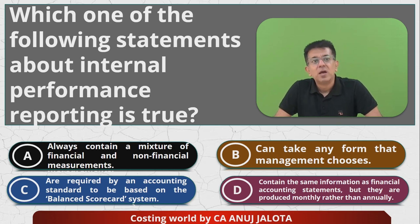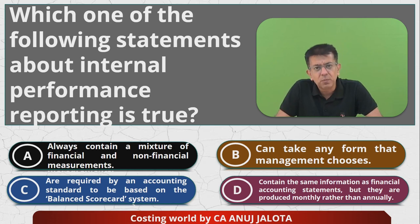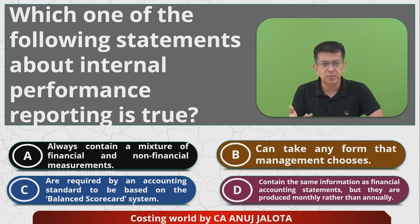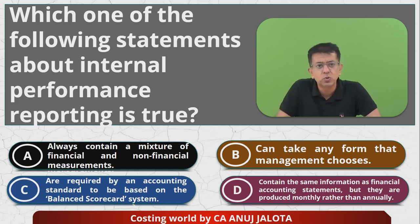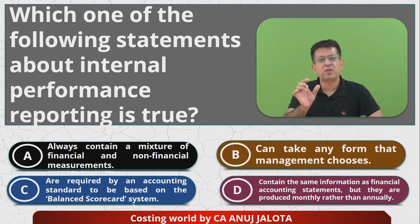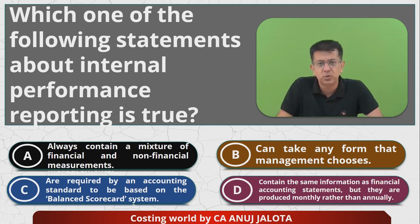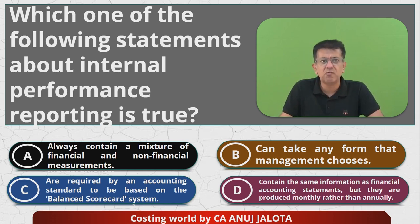Option A says it always contains a mix of financial and non-financial measures. That is not necessarily true — it depends upon whatever you are trying to measure. Internal reports can contain financial data or non-financial data. Financial information means profit, sales, and so on — available from your financial records. Non-financial means something not available from financial books, like labor turnover or consumer feedback. These are called non-financial performance indicators. So it may or may not contain both — it depends on the organization.